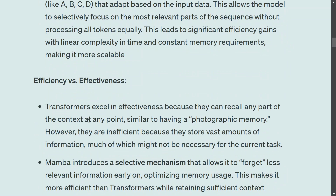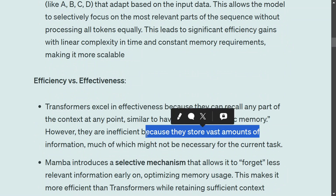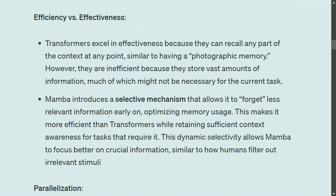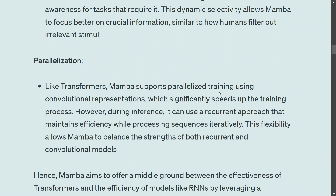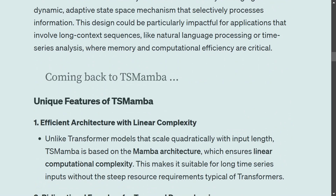Transformers are more effective at capturing information but are inefficient because they need to store vast amounts of information. Mamba is not quite as effective, but the hit on accuracy is small while the gains in complexity are huge. Mamba introduces a selective mechanism that allows it to forget less relevant information, making it more efficient. It also supports parallelized training using convolutional representation and can switch between recurrent and convolutional modes. People are still exploring Mamba as a replacement for transformers, since large transformer models require huge GPUs and a lot of RAM, and are not easily scalable for deployment. Hence Mamba is a good alternative.